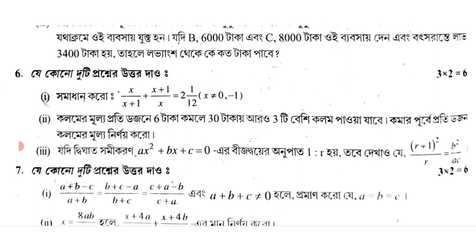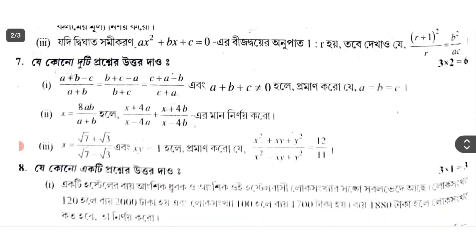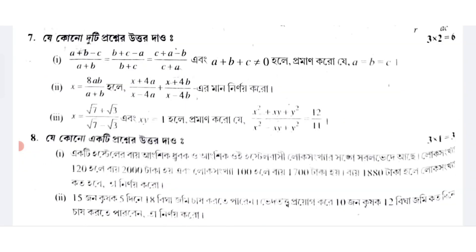দিখাত শোভি বিকরে — if ax² + bx + c = 0 and the ratio of roots is 2:1, show that (R+1)² / R = b² / ac. Check the other question: (3 - c/a + b)(b + c - a / b + c)(c + a - b / c + a)(a + b + c) ≠ 0.